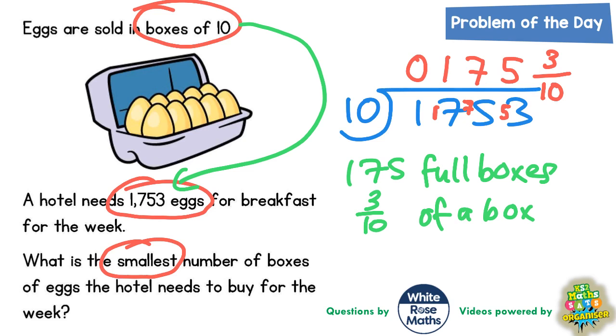We'd only need an extra 3 eggs out of the next box. But obviously you can't just buy 3 tenths of a box. You can't go to the supermarket when they sell boxes of 10 eggs and say, well I don't want the box of 10, I only want 3. Life just simply doesn't work like that.